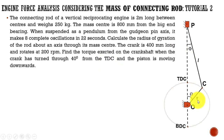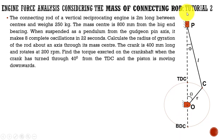This is the configuration diagram of the given system — a vertical reciprocating engine. This is the top dead center and this is the bottom dead center. The piston starts at TDC, and at the extreme end it is the bottom dead center.